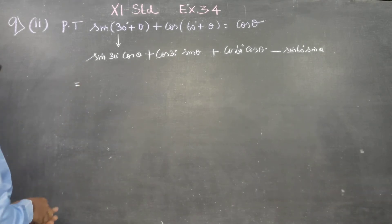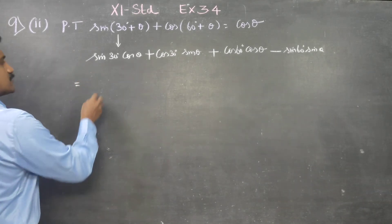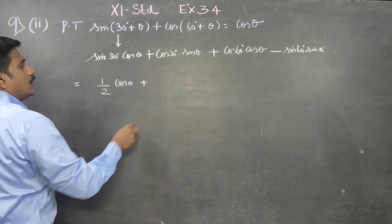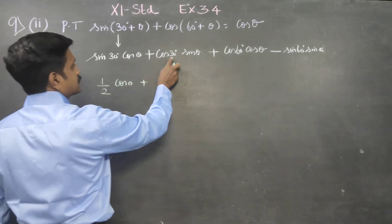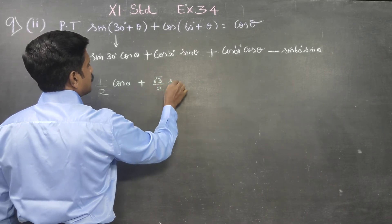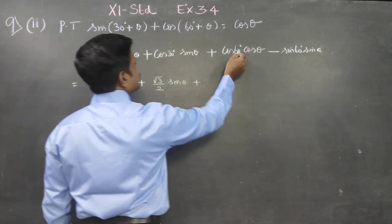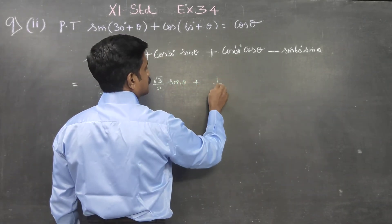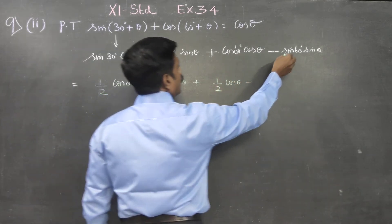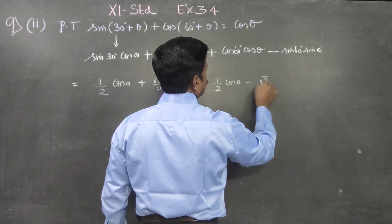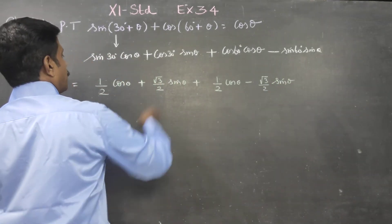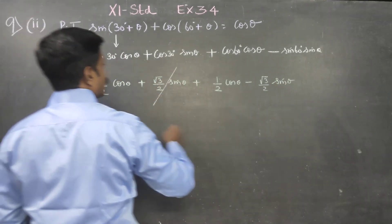Is equal to — what is cos 30? cos 30 is root 3 by 2, cos theta. What is cos 60? 1 by 2, cos theta. What is sin 60? root 3 by 2, sin theta. Plus root 3 by 2 sin theta.